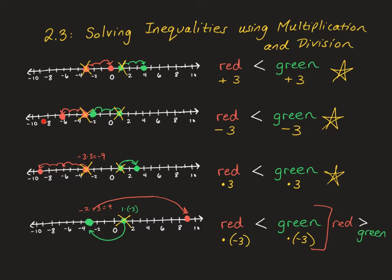When you're adding and subtracting numbers and you have an inequality, you still keep the same inequality. When you're multiplying by a positive number, you still keep the same inequality. But when you multiply or divide by a negative number — and by the way, it also works for division — what was less than flipped around and became greater than. That's why we need to flip the sign when we multiply or divide by a negative number.